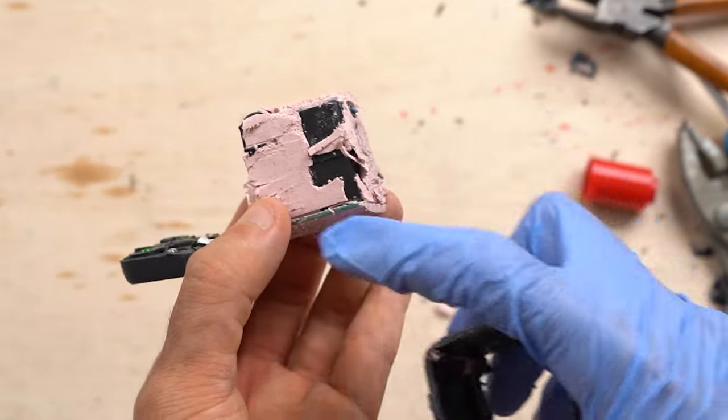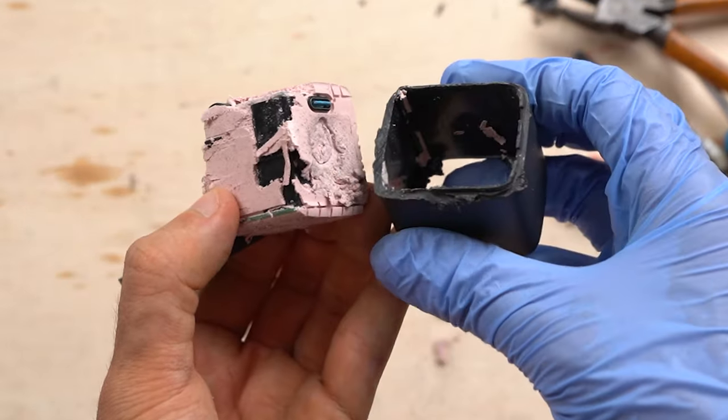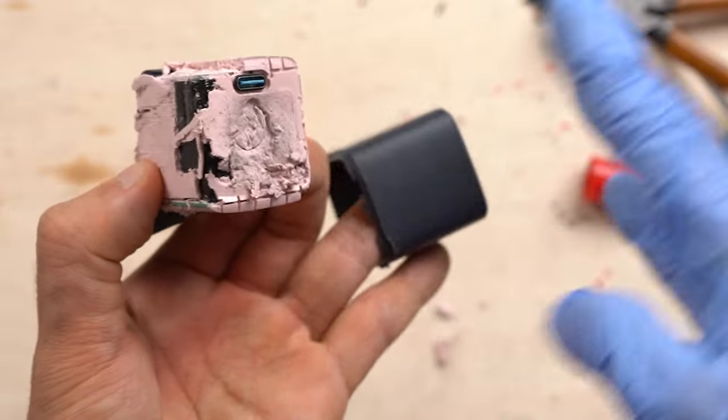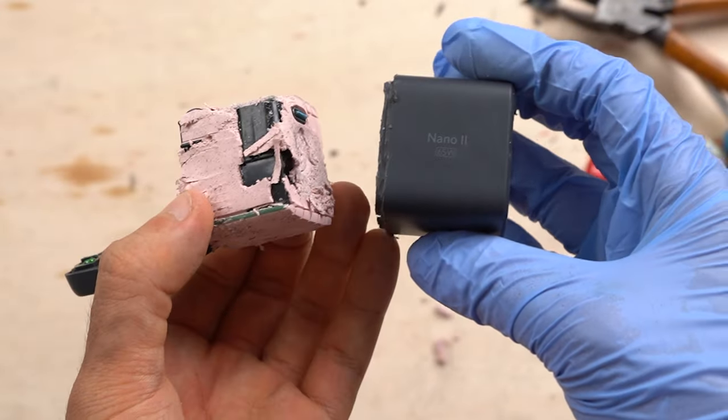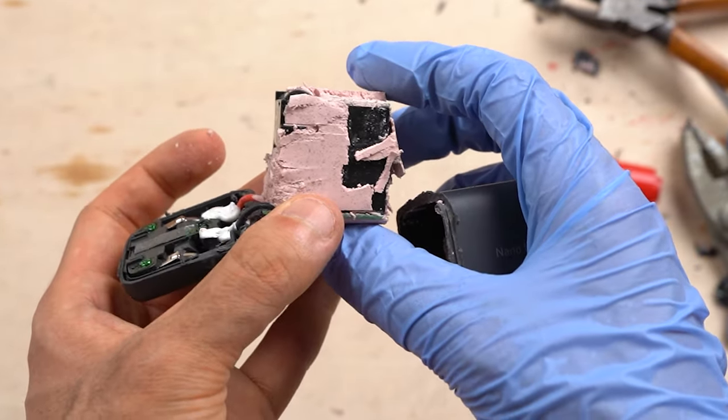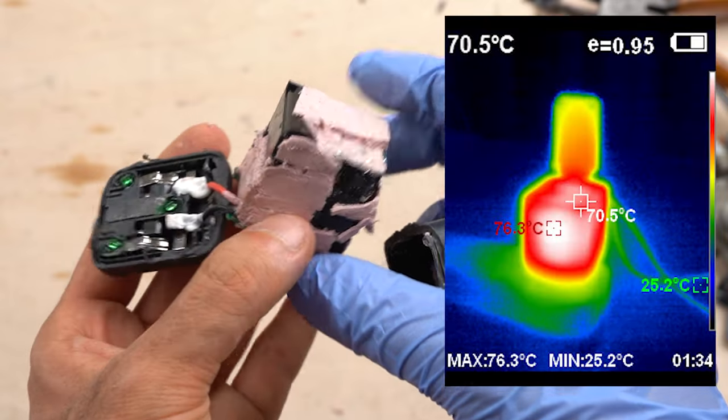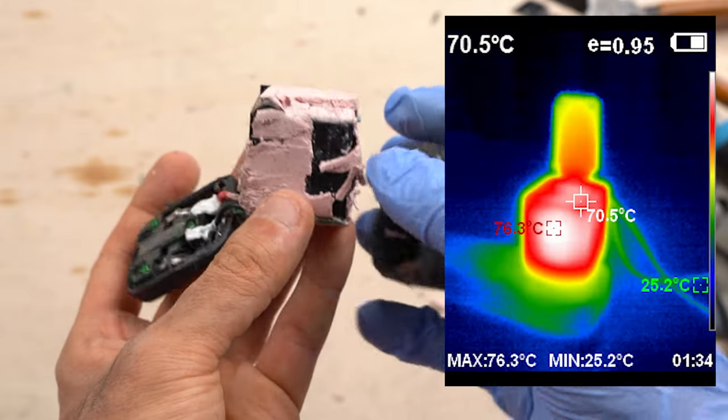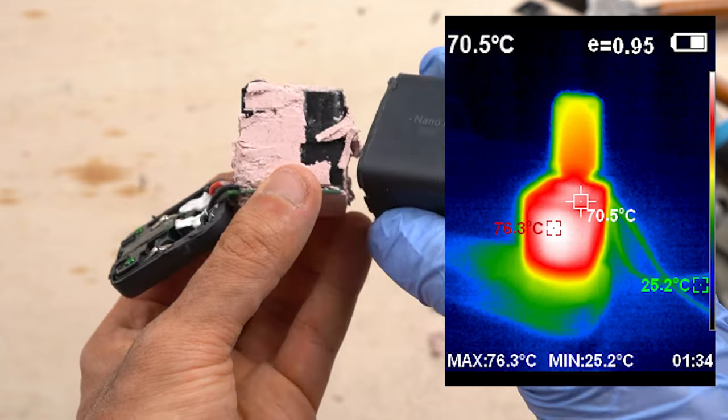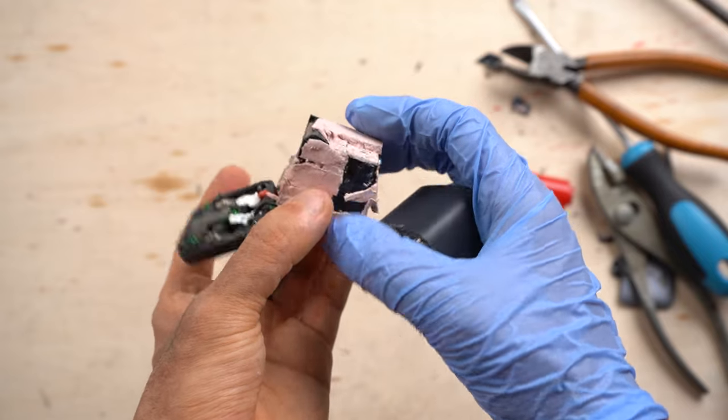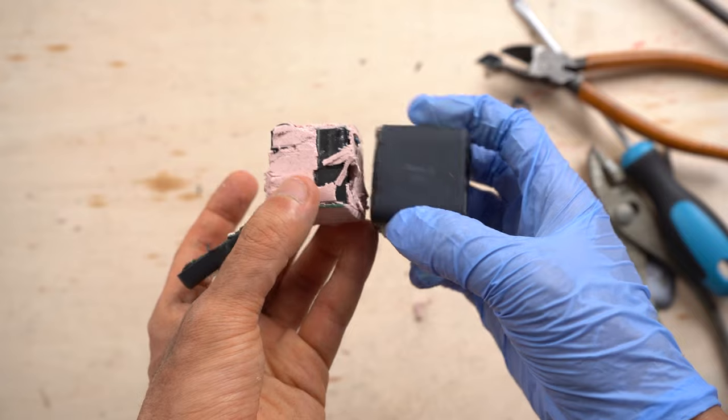I believe the circuit boards that generate heat are stuck to the inside of the case, so that the heat is dissipated from the surface efficiently. As I mentioned in the previous video, chargers of this series generate a lot of heat. They can get up to about 76 degrees, and yet there's no room to dissipate heat. That's why it's filled with silicone to increase thermal conductivity.